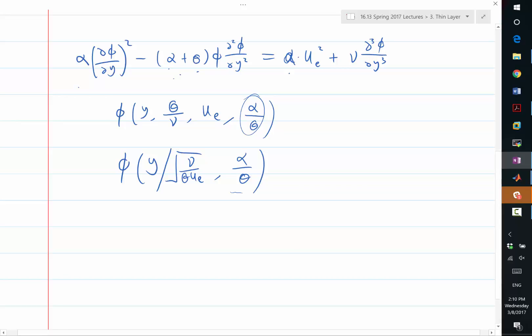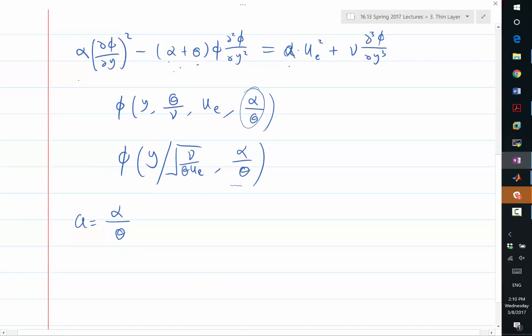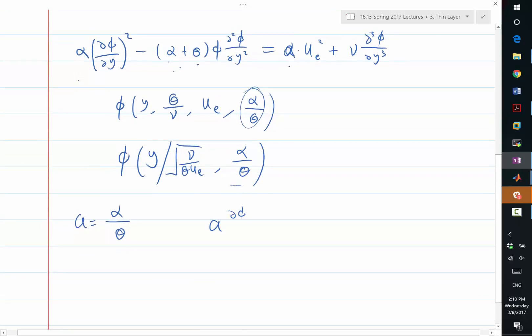what I get is instead of alpha, I get alpha over theta, right? I'm just called this a. So what I get is a times this minus 1 plus a. So theta becomes 1. Alpha becomes a. Phi. Not y anymore. Now it's eta. Is equal to a times ue becomes 1, right? Plus nu also becomes 1. So third order derivative with respect to eta. So that's what we get.